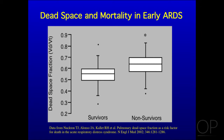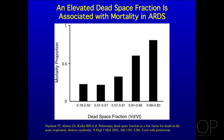When we broke the data down according to dead space fractions in increments — with mortality on the Y-axis and dead space fractions on the X-axis — at the cutoff around 0.57 to 0.61, the relationship to mortality began to increase sharply in those two bar graphs.